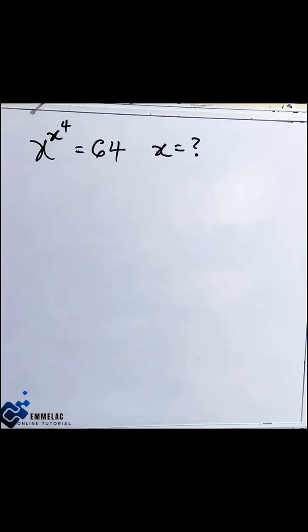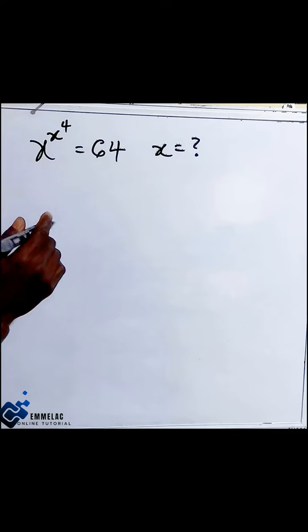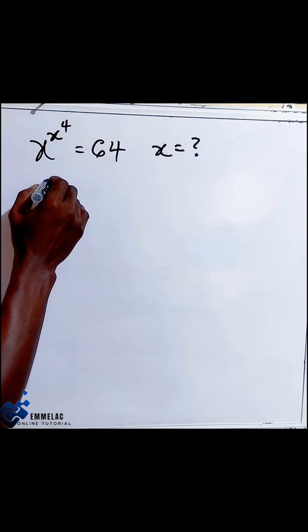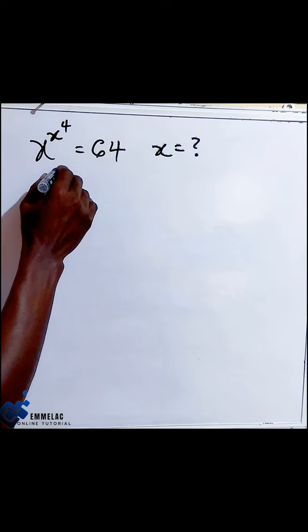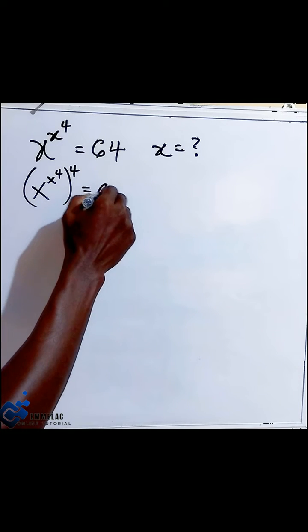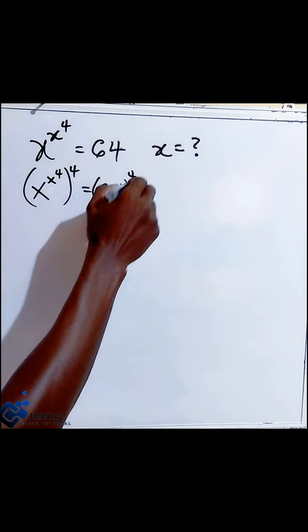Now in solving this, let's raise both sides by the power of 4. So here you have x raised to the power of x raised to the power of 4, r raised to the power of 4, then equals to 64, r raised to the power of 4.